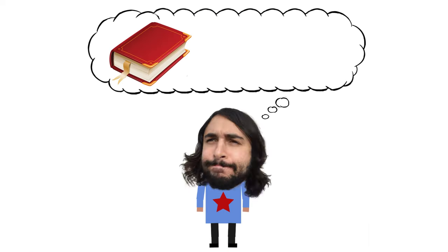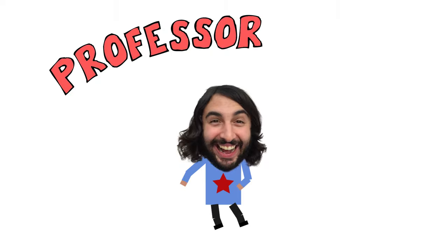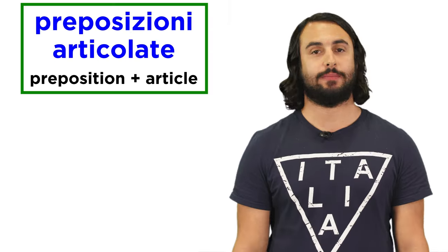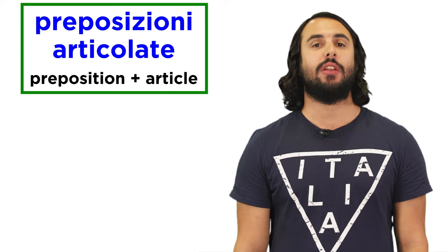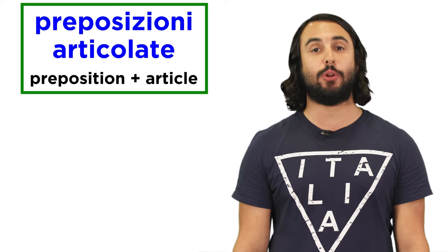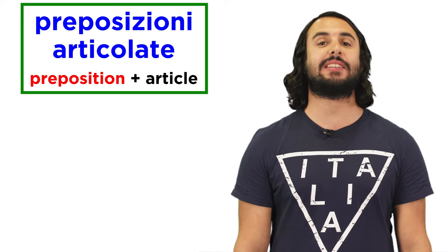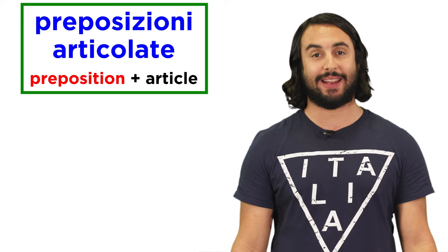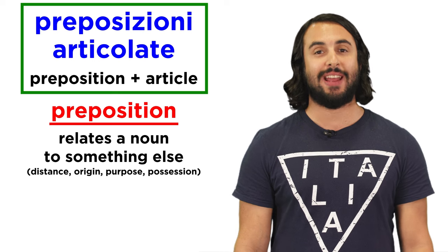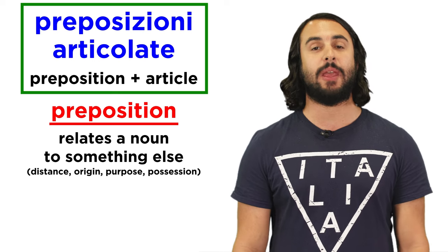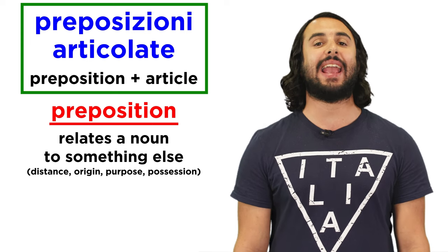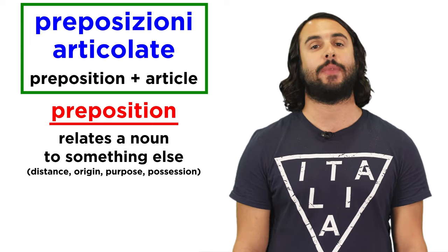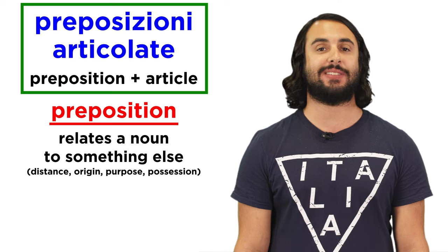It's Professor Dave, let's talk prepositions. In Italian there are words called preposizioni articolate. These are combinations of simple prepositions and articles. First, let's clarify what a preposition is. A preposition is a part of speech that describes a relationship between a noun and some other element in the sentence. They indicate a variety of ideas like distance, origin, purpose, and possession.